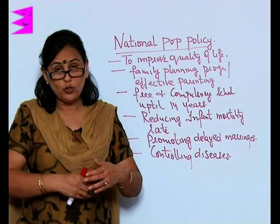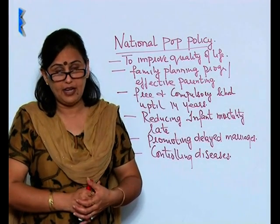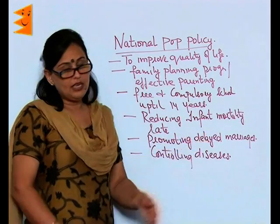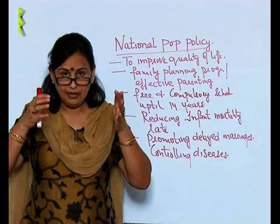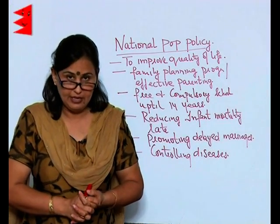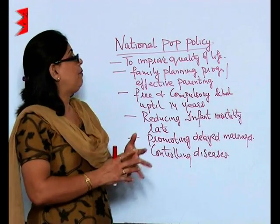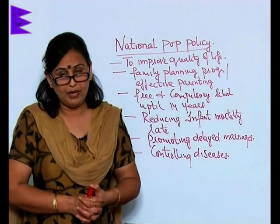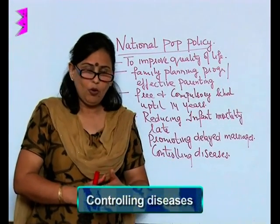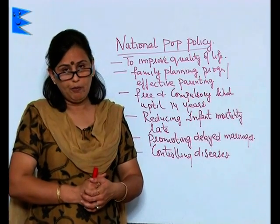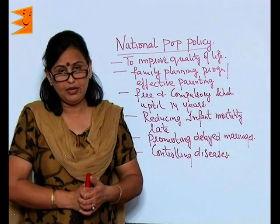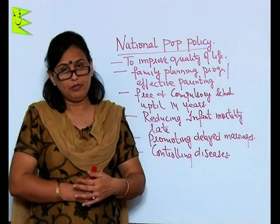Promoting delayed marriages is another key objective. No girl should get married below 18 years, and it should be encouraged that marriages happen above the age of 21. When marriages are delayed, the girl is fit — healthy mentally and physically — and thus the population of the country also becomes healthier.